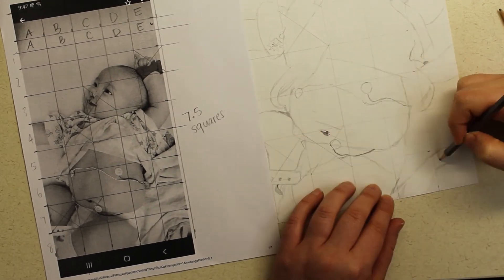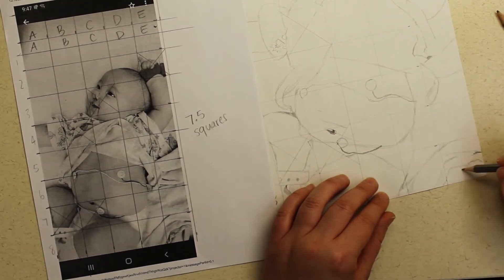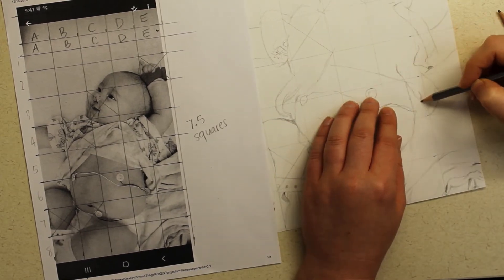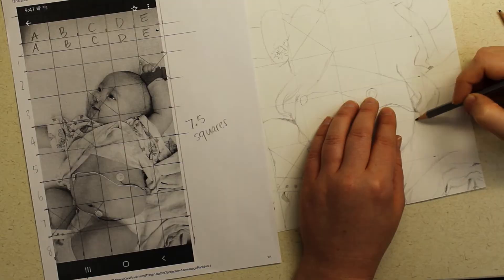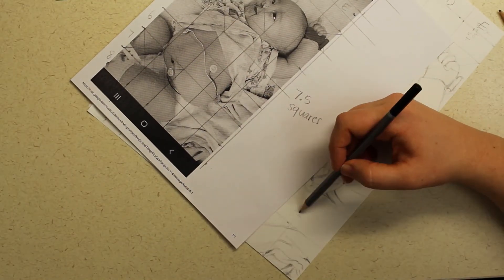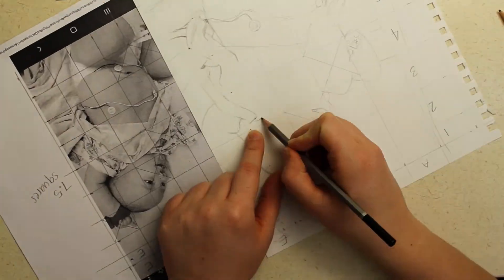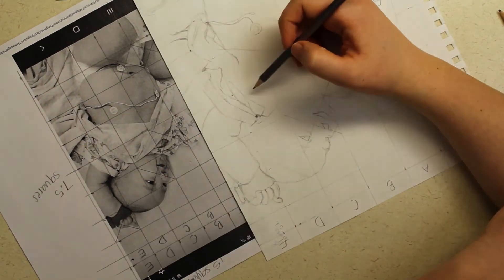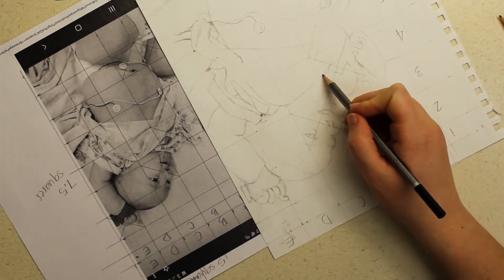Some boxes don't really have a lot going on, but even in those boxes look really closely to find shadows. Sometimes the shadows don't look like they would be part of the drawing, but they're so important. So make sure you outline where you're going to put your shadows. You can see that sometimes I sort of color those in a little bit already so that I don't get confused when I'm done.